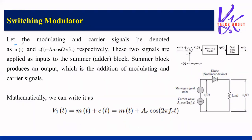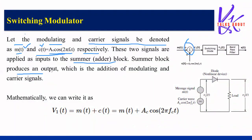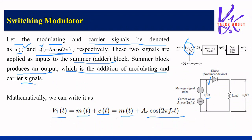Let the modulating and carrier signals be denoted as m(t) and c(t), where c(t) = Ac·cos(2π·fc·t). These two signals are applied as input to the summer block, which produces the addition of the modulating and carrier signals. Mathematically, v1(t) = m(t) + c(t) = m(t) + Ac·cos(2π·fc·t), and this is the signal at the input of the diode.